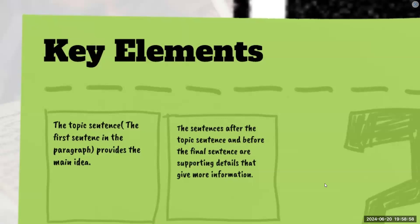What are the key elements? The topic sentence is the first sentence in the paragraph, typically, and it provides the main idea. That first sentence tells us what the entire paragraph is about. The sentences after the topic sentence and before the final sentence are supporting details that give more information about the main idea, so that your reader can better understand the idea you're trying to tell them.